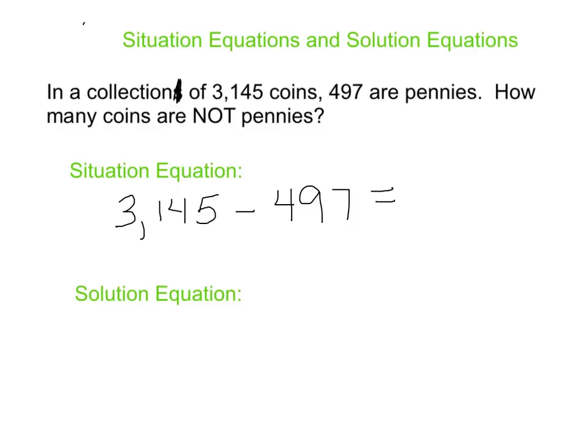In a situation equation, I might just use a variable to represent that number. A lot of times in algebra we see x or n, so I'm just going to stick x right in there. Now, the solution equation in this case is very much the same thing. I'm going to have 3,145 and I'm going to take away 497, and I can write that in the fancy horizontal way or I can write it in the vertical way, which is how I'm going to get things done today.